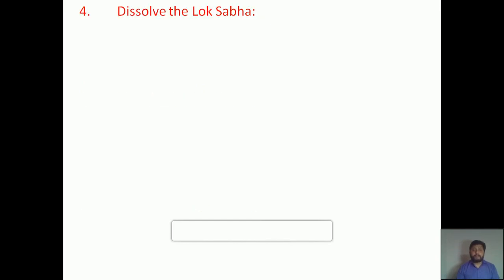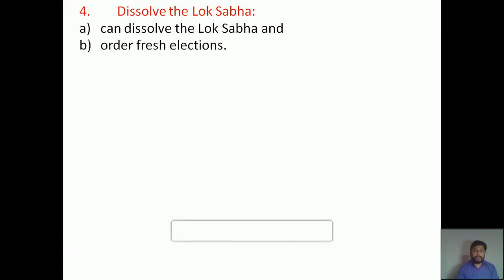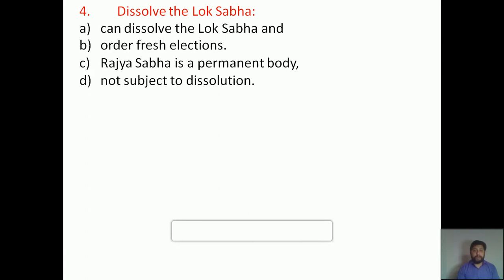The fourth power is to dissolve Lok Sabha. Lok Sabha is known as the people's house, as its members are directly elected by the people. The President has the power to dissolve Lok Sabha and order a fresh election for a number of reasons. But in the case of Rajya Sabha, Rajya Sabha is a permanent body and therefore it cannot be dissolved. If the members of Rajya Sabha are elected for six years, they can remain in power until completing their period of six years.